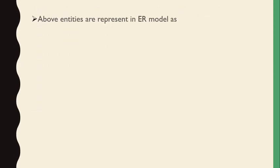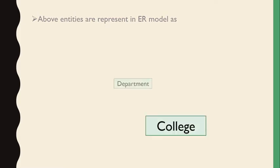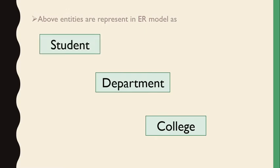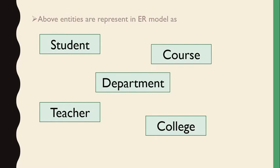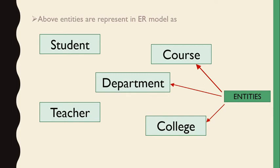These entities are represented in an ER model as: college, department, student, teacher, and course. All of these are entities and are represented by rectangles in the ER model. Some entities are present physically, while others are present only logically in a virtual manner — all these types come under entities.